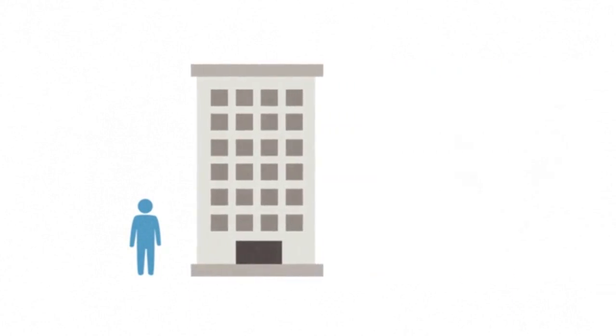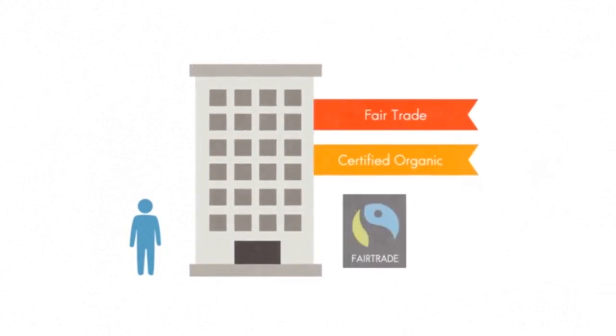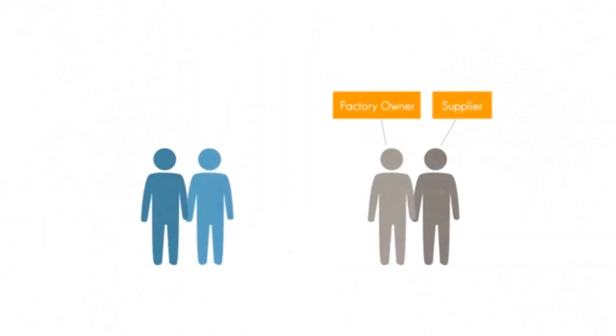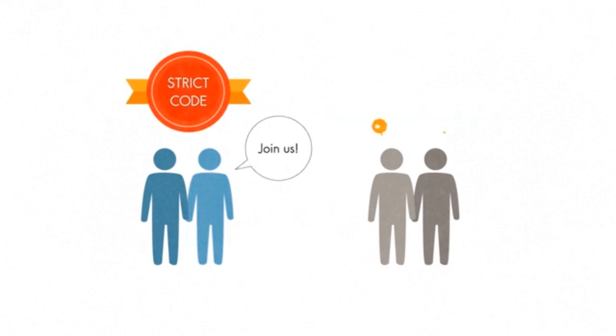So, if you are a designer in a large company, you can ensure that your organisation sources fabrics or materials that are fair trade or certified organic. You can also encourage your organisation to engage with suppliers or factories that abide by strict codes of conduct and treat their workers fairly.